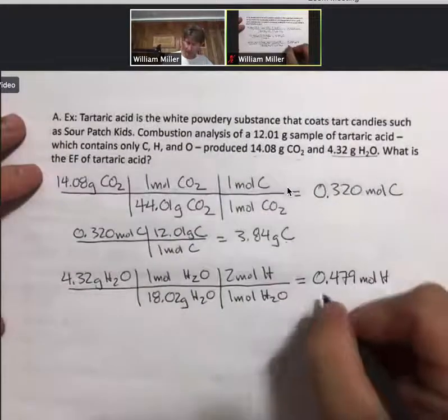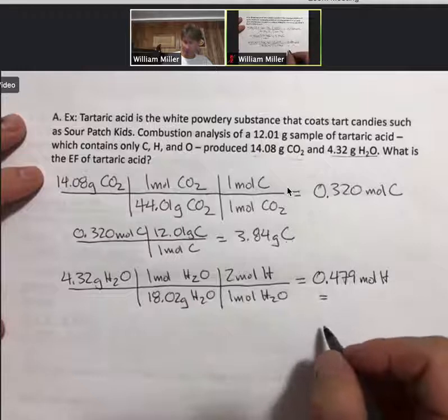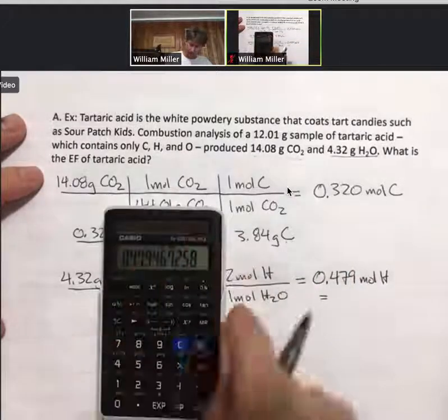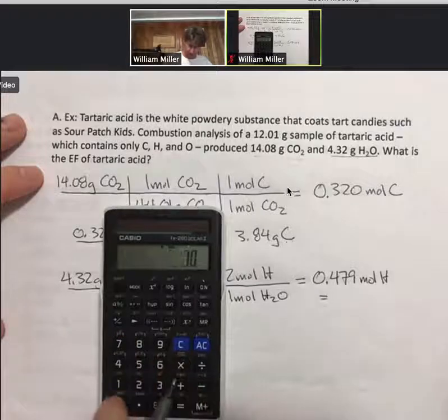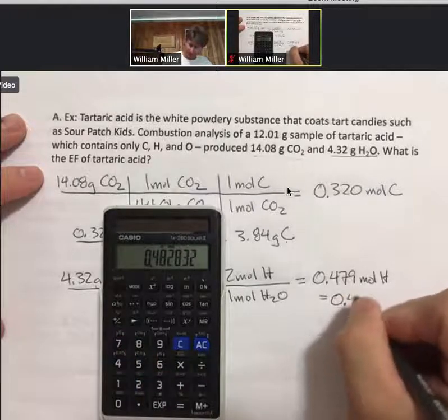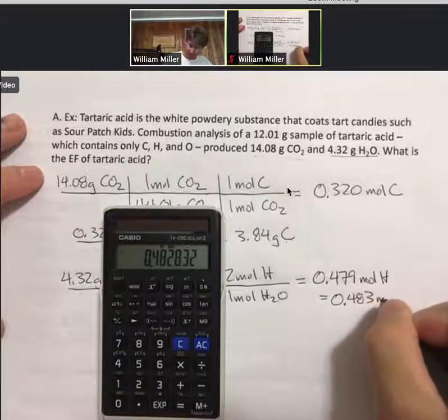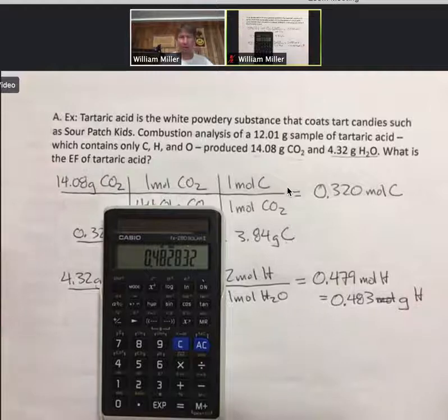And I'll just do times the 1.008 grams per mole from the periodic table, and I get 0.483 grams of hydrogen. Those are grams of hydrogen.